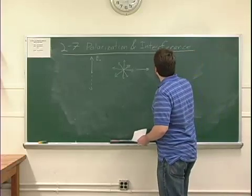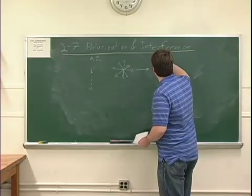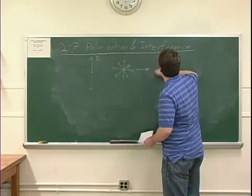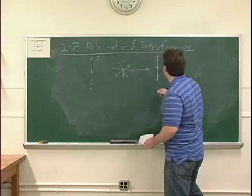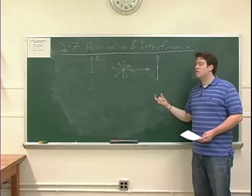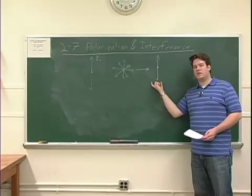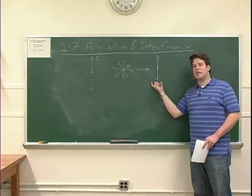But as it does, it'll also reduce the magnitude of those electric field vectors. If we have a polarizer here in the up and down direction, it will also reduce the magnitude of those electric field vectors, in effect reducing the intensity of the light.